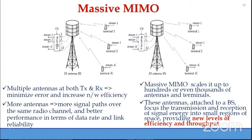For pre-coding of downlink data and decoding of uplink data, channel state information (CSI) is required — global CSI regarding the link between the base station and each user. This requires pilot signal transmission between the base station and users to estimate the channel state, which is then used for pre-coding and decoding at the base station.